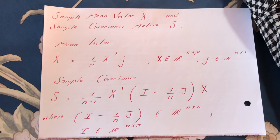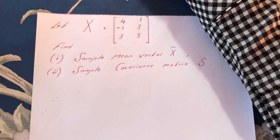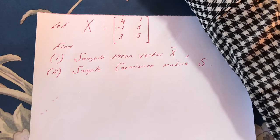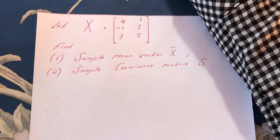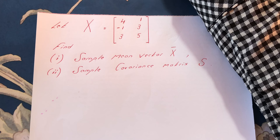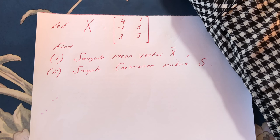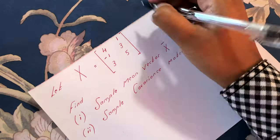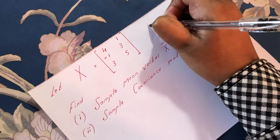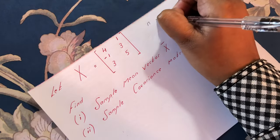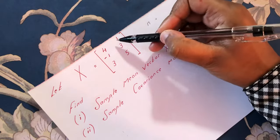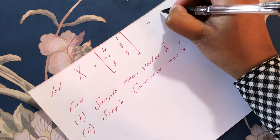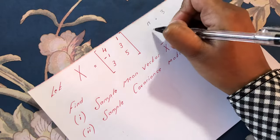Let's see a question where we need to find the sample mean vector and the sample covariance matrix. We have a matrix X of order 3 by 2. From the matrix we can see that n, which is the number of observations and the number of rows, is 3.